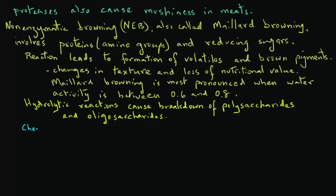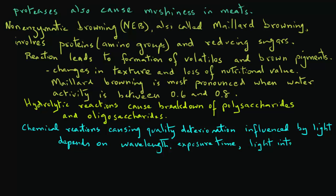There are a number of chemical reactions that cause quality deterioration in foods that are influenced by light. They depend on the wavelength, the exposure time, the light intensity, the temperature, and the available oxygen in causing changes in the food.